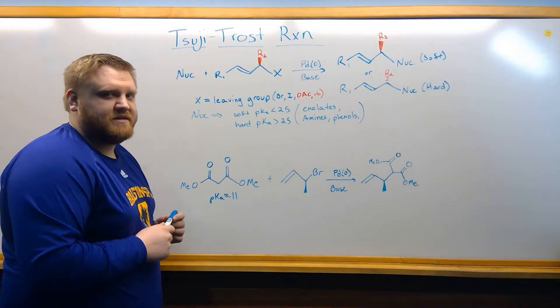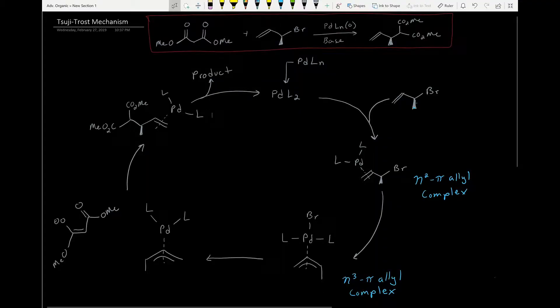So let's take a look at the mechanism. Here's our Tsuji-Trost mechanism. We have our reaction from before, and we're going to start here with our palladium catalyst. So it's going to do a couple dissociations to get down to only two ligands here, and it's going to have an oxidation state of zero. Then we're going to do an association with the allylic compound with bromine leaving group.